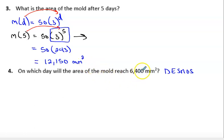All right, on which day will the area of the mold reach 6,400 millimeters squared? All right, so on which day? This one's going to be a little more challenging. So they want to start, they're giving you the output here, right? So this is your output, and they're saying when will 50 times 3 to the x power or d power here equal 6,400? This is going to require a little more than just being able to solve this. You're going to need a little algebra 2 here, but I'm going to show you how to do this on Desmos.